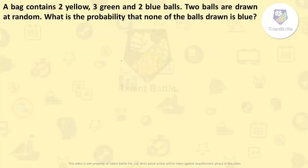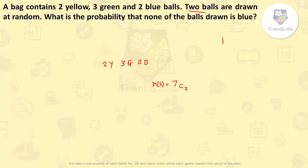A bag contains 2 yellow, 3 green and 2 blue balls. Two balls are drawn at random. What is the probability that none of the balls drawn is blue? Total there are 7 balls; drawing 2 balls. So the sample space — total possible outcomes — will be 7C2. Probability is number of events divided by sample space, so sample space is 7C2 because total there are 7 balls and they are drawing 2.